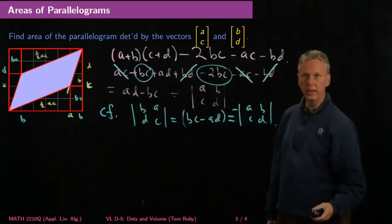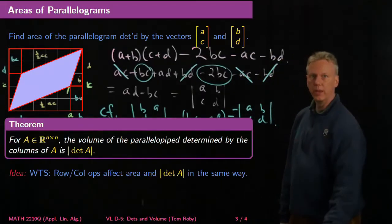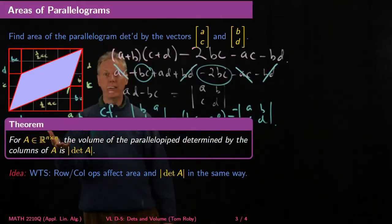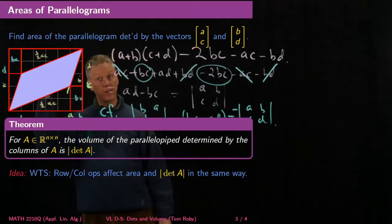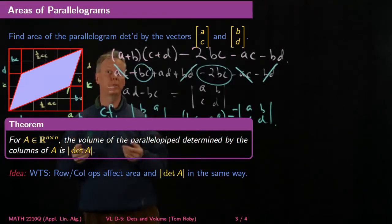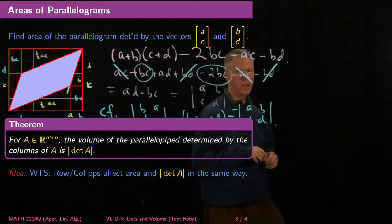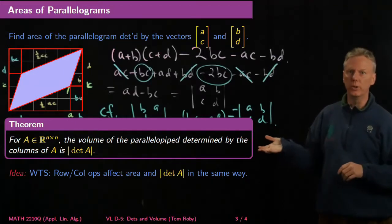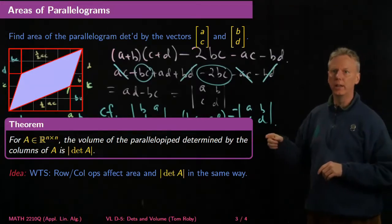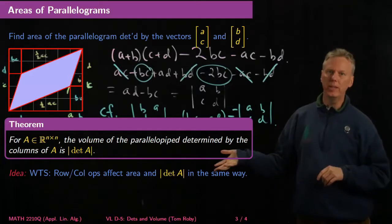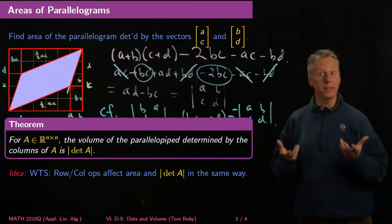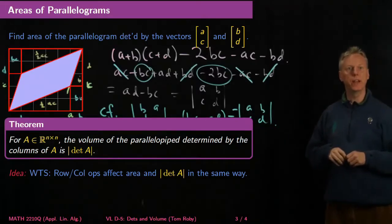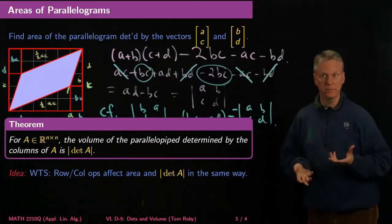So the theorem is: if I have any n-by-n matrix, the volume of the parallelepiped determined by the columns of A equals the absolute value of the determinant of A. The key idea is that row and column operations affect area the same way that they affect the absolute value of the determinant of A.